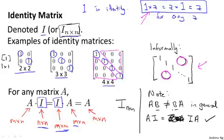That's it for the properties of matrix multiplication and special matrices like the identity matrix. In the next and final video on our linear algebra review, I'm going to quickly tell you about a couple of special matrix operations. After that, you'll have everything you need to know about linear algebra for this class.